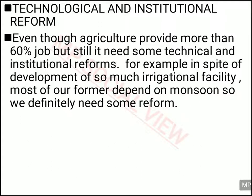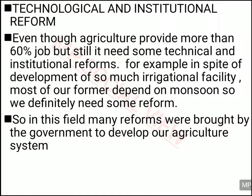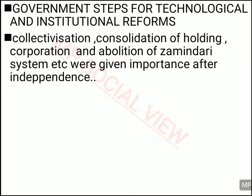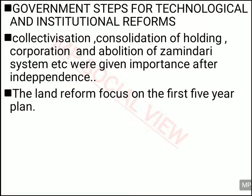Now let us discuss the technological and institutional reforms of our country. Agriculture provides a lot of employment, and many reforms have been done by the government. However, despite work on irrigation facilities, most farmers are still dependent on the monsoon for their crops. So we really need to reform our agriculture system. Soon after independence, we focused on collectivization, consolidation of holdings and cooperation to address the problem of small land holdings. We also focused on abolition of the Zamindari system soon after independence.